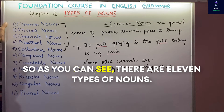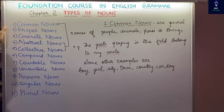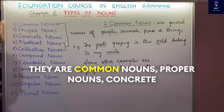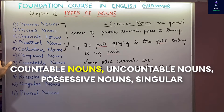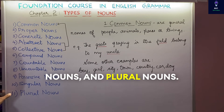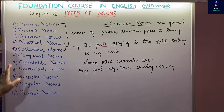As you can see, there are 11 types of nouns. They are common nouns, proper nouns, concrete nouns, abstract nouns, collective nouns, compound nouns, countable nouns, uncountable nouns, possessive nouns, singular nouns, and plural nouns. We will see each of these in detail.